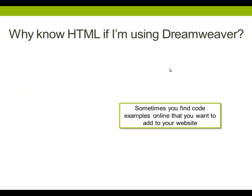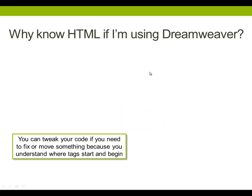Sometimes you find code or examples online that you want to add to your website. Coders do this all the time — they'll borrow code from other coders, and if you don't know how that code works, it will be very difficult to incorporate it into your own website. Also, you can tweak your code or fix something if you understand how. Before we didn't teach students HTML and CSS, and when they had a problem they didn't know how to debug their code. It's really important that you know how to debug your code yourself.